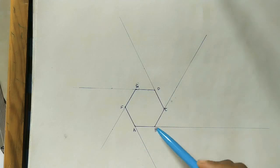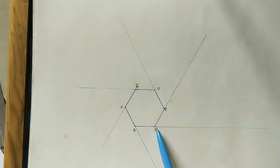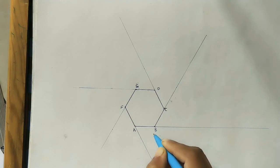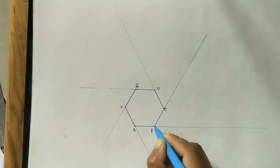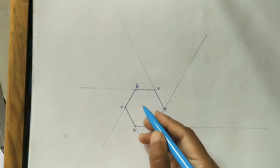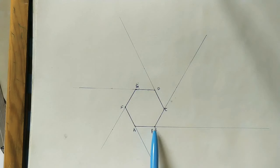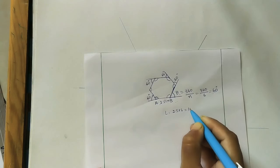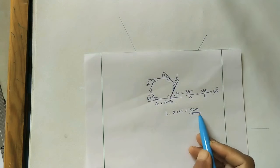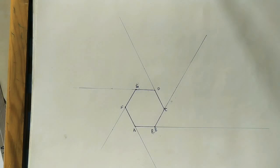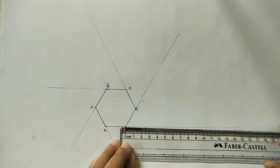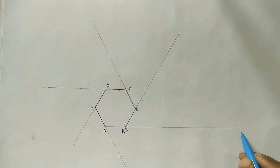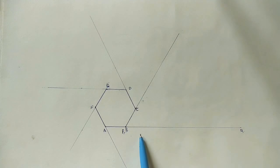After extending all sides, on the first side take the peripheral length of the hexagon from point P on side AB. Each side is 2.5 centimeters and there are six sides, so the peripheral length equals 2.5 times 6, which is 15 centimeters. Using a scale, mark 15 centimeters from P to get point Q.